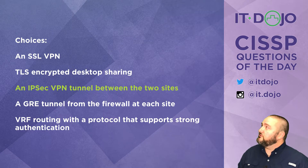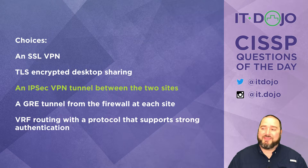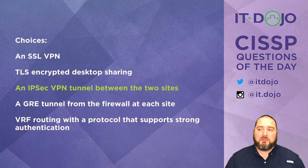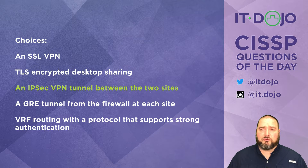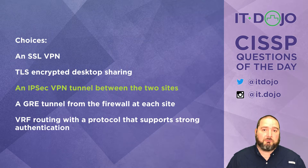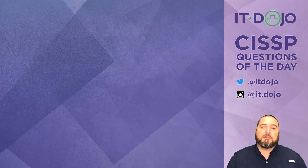The final option says VRF routing with a protocol that supports strong authentication — that's just there to sound fancy and distract you. VRF is all about having multiple routing tables running simultaneously on a router, and strong authentication in a routing protocol like OSPF or EIGRP would be fantastic, but it does not pertain to connecting sites to one another.